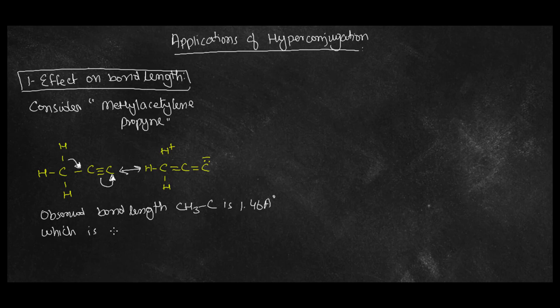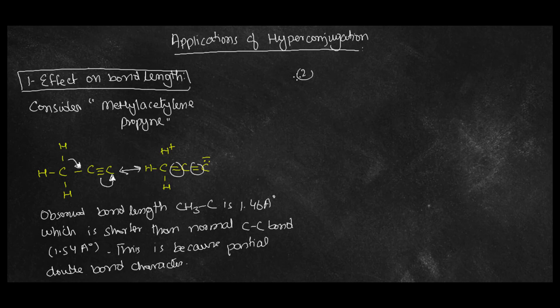So what is the effect of bond length? Observe the bond length between CH3 and C is 1.46 angstrom, which is shorter than the normal carbon-carbon bond that is 1.54. This is because of partial double bond creation, as seen in the example.